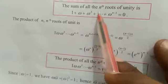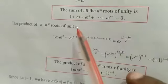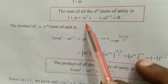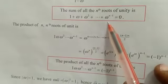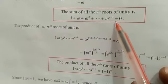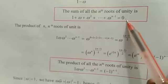The sum of all the nth roots of unity is 1 plus omega plus omega squared plus etc. plus omega power n minus 1 is always equal to 0.